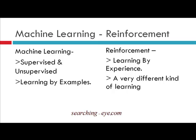A basic difference between machine learning and reinforcement learning: a very crude way to differentiate the two is that machine learning includes supervised, unsupervised, and semi-supervised learning — a vague definition being learning by examples. Reinforcement learning, on the other hand, is learning by experience. This is a very different kind of learning algorithm in which an agent learns through experience.